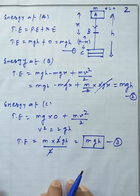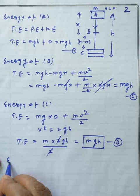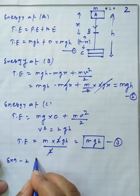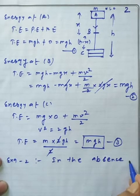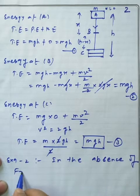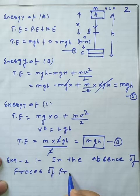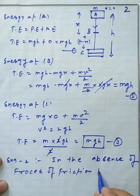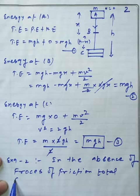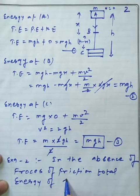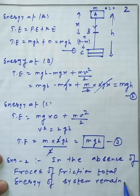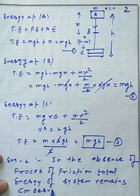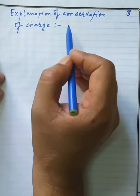Example number 2: in the absence of forces of friction, the total energy of the system remains conserved. This is the suggestion we have. Now we move to the explanation of the conservation of charge.